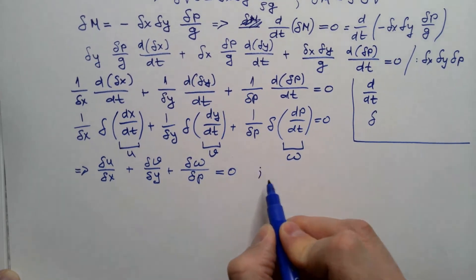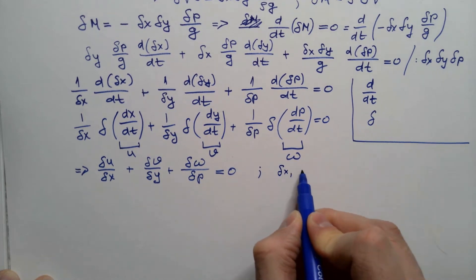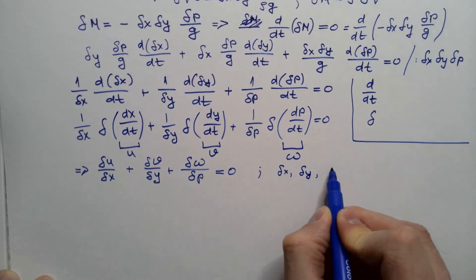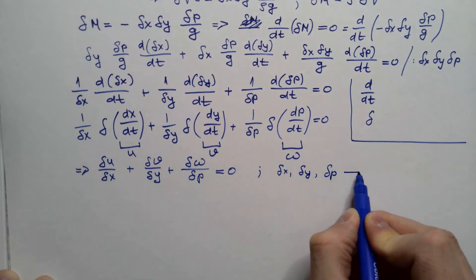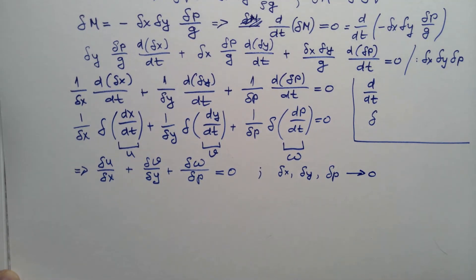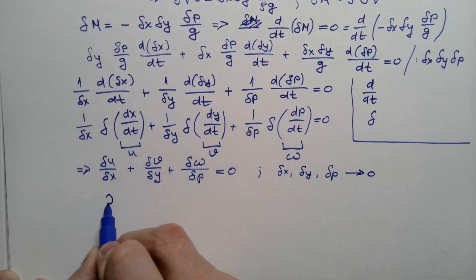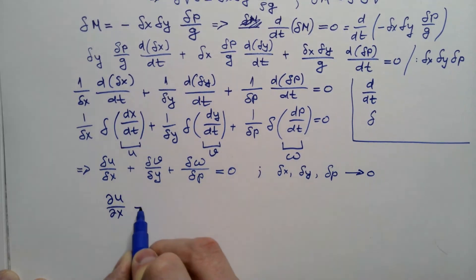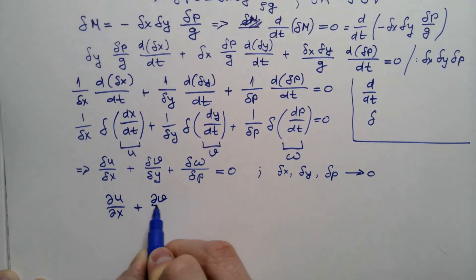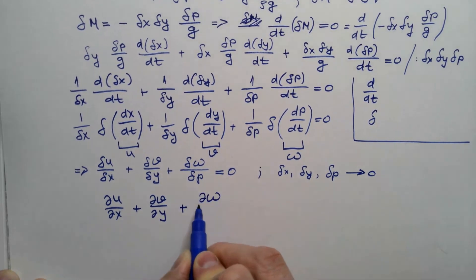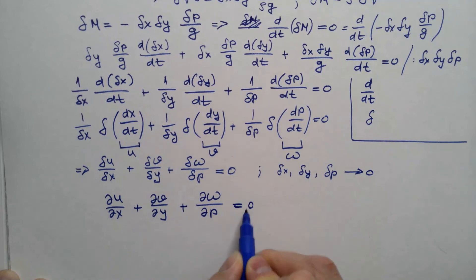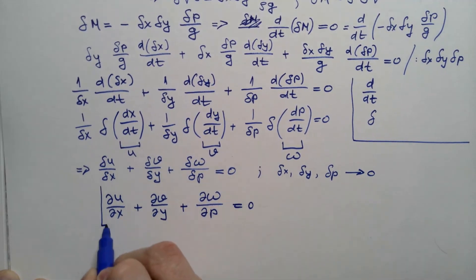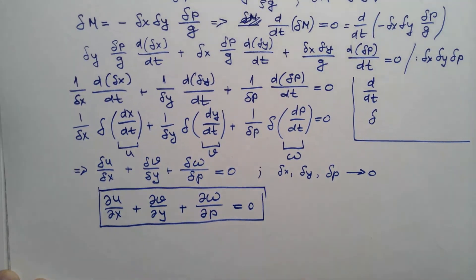And now I let delta x, delta y, as well as delta p to go to zero in the limit case. And this equation becomes delta u delta x plus delta v delta y plus delta omega delta p equals zero. And this is the mass continuity equation in the pressure coordinate system.